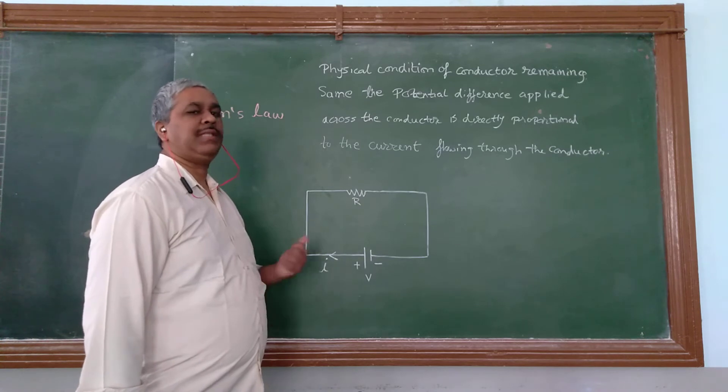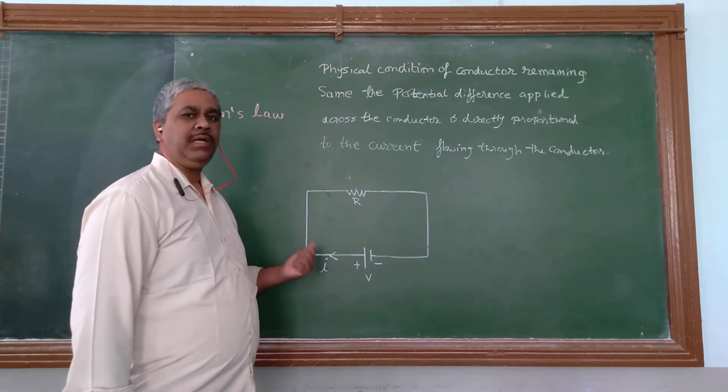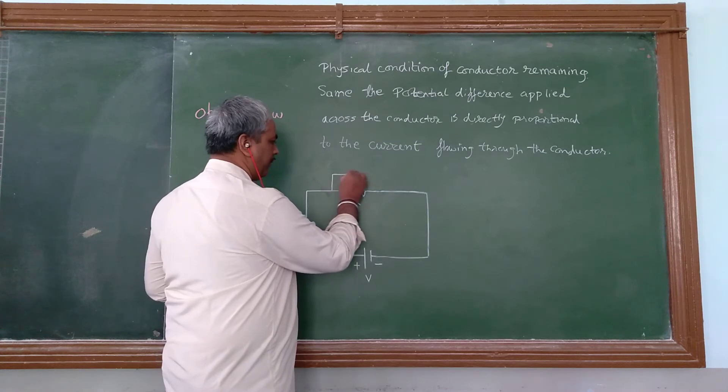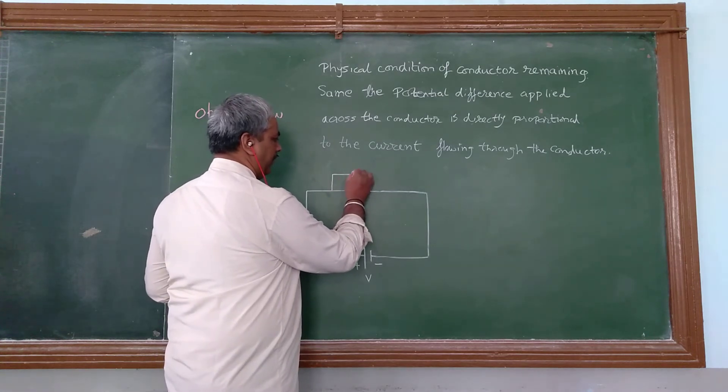And the voltmeter is always connected in parallel to the resistance. So, we are going to put a voltmeter across the resistance.